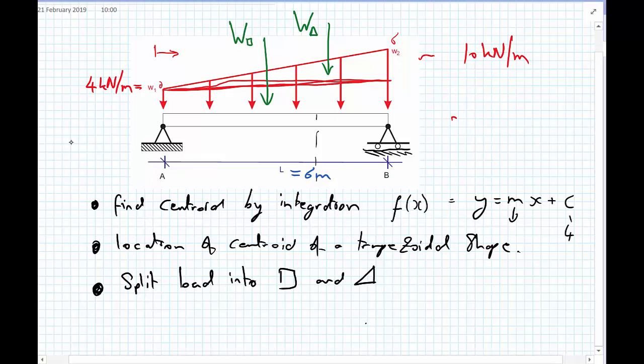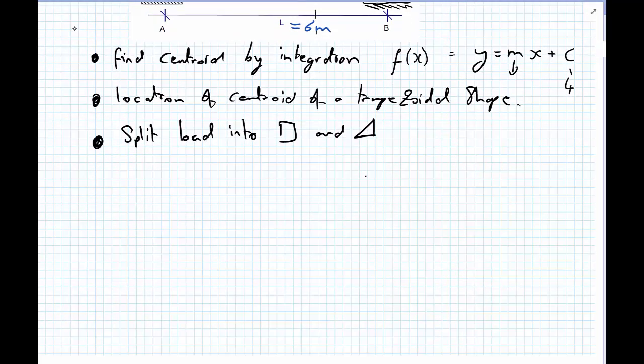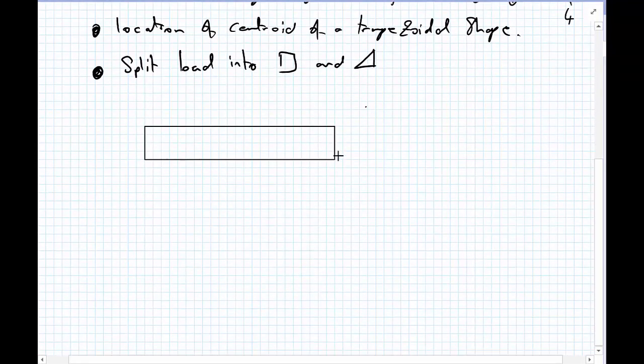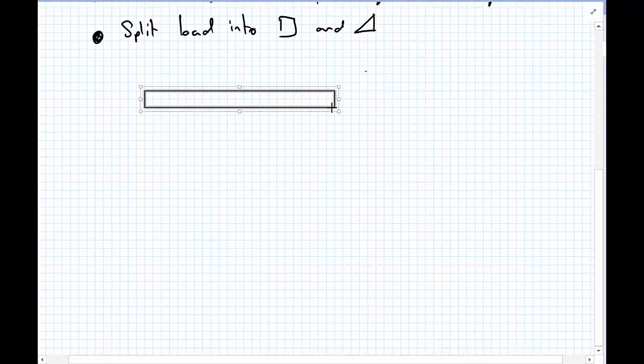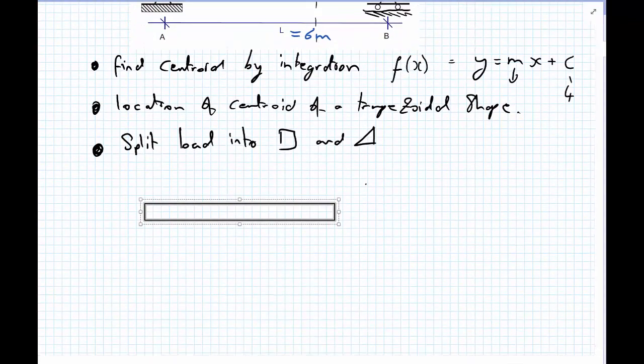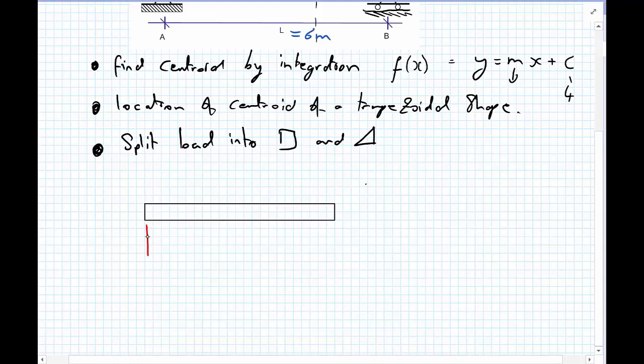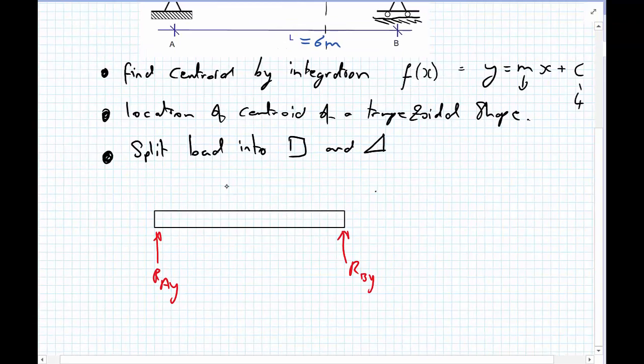So with that decision made, I'm going to draw the expected free body diagram of our system. We have reaction RAY, we know RAX equals 0 from the sum of the forces in the X direction, and RBY.